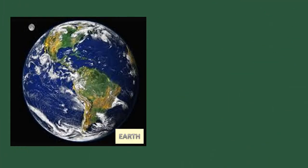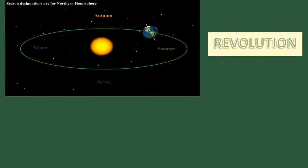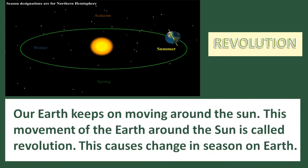You all know that we live on the planet Earth. It is the third planet in our solar system, and due to the presence of water on Earth, it looks blue and is called the blue planet. The Earth looks like a huge sphere and it constantly keeps on moving around the sun. This movement of Earth around the sun is called revolution, and because of the revolution of Earth, there are changes in seasons.